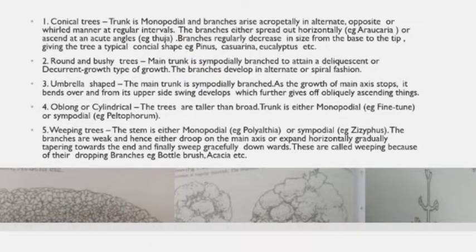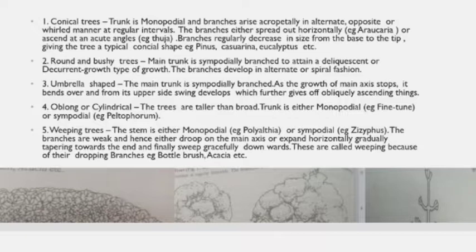In round or bushy trees, the main trunk is sympodial, attaining a deliquescent or decurrent type of growth. Branches develop in alternate or spiral manner; lower branches are spreading and upper ones grow upward and outward. The arrangement ensures minimum overlapping of leaves. Examples are mango and cinnamon.